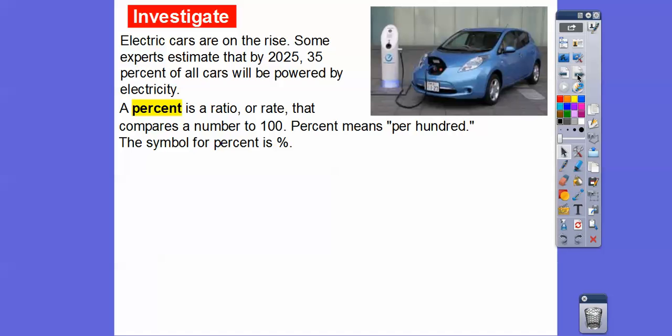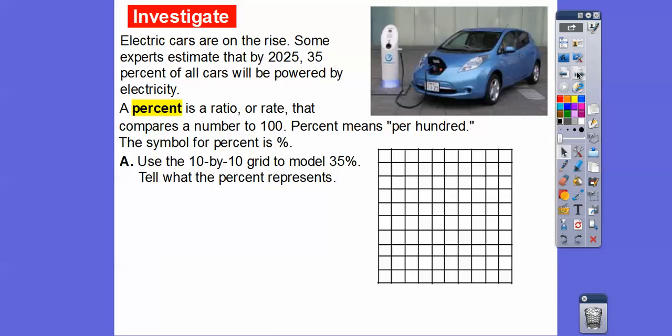A percent is a ratio or fraction, or a rate that compares a number to 100. Percent usually means per 100, and this is our symbol for percent. Most of you guys probably knew that already. We're going to use a 10 by 10 grid here to model 35%. The reason why this is 10 by 10 is because there's 100 little squares right here. So per 100, we can do percent.